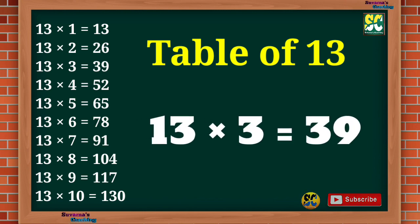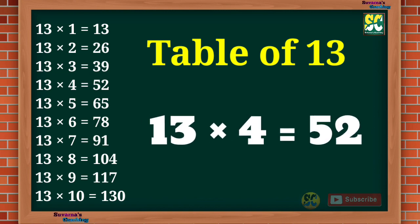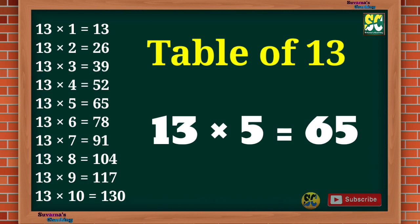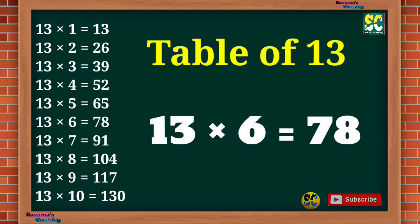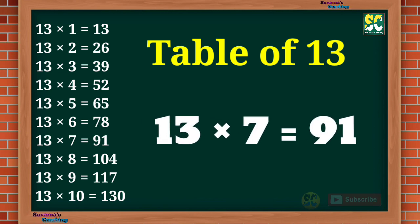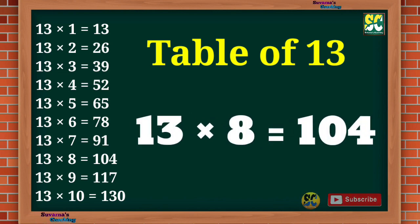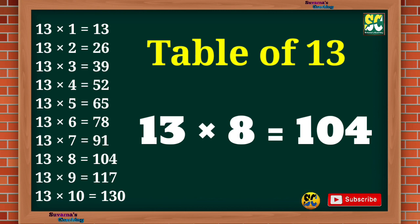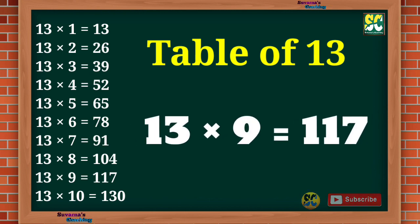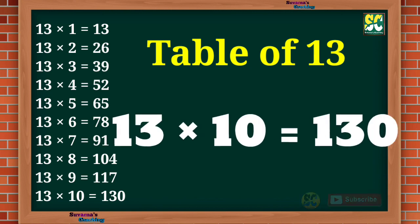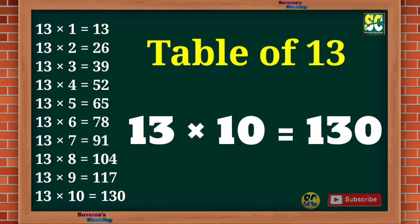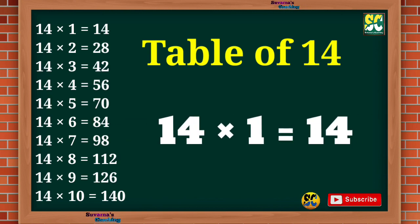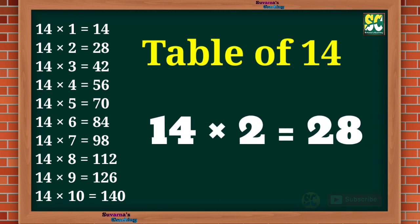Table of 13. 13 1s are 13, 13 2s are 26, 13 3s are 39, 13 4s are 52, 13 5s are 65, 13 6s are 78, 13 7s are 91, 13 8s are 104, 13 9s are 117, 13 10s are 130.